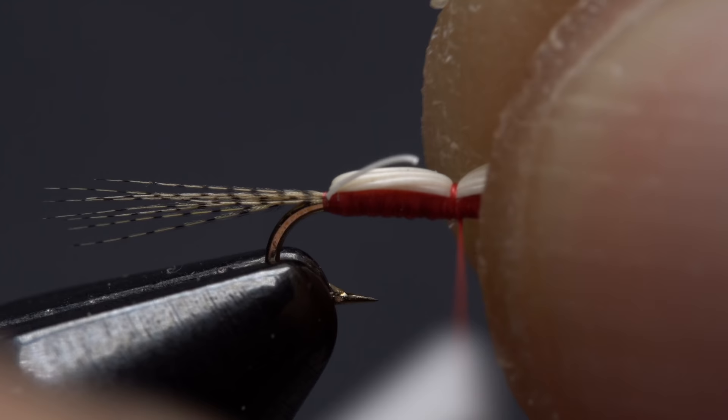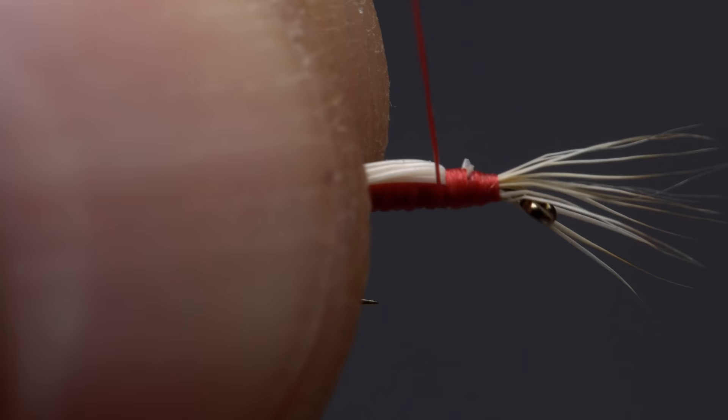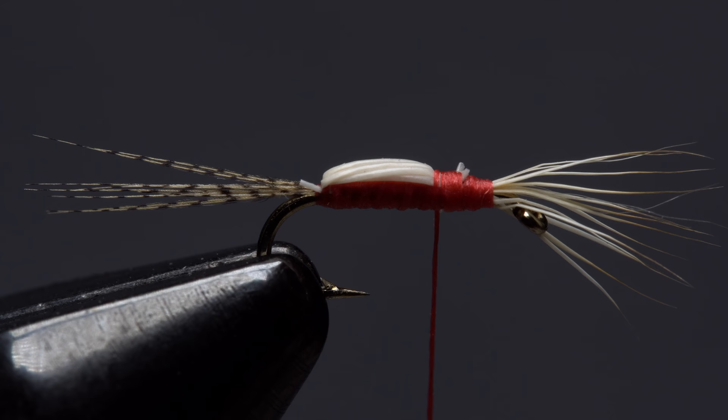Pull the deer hair forward and take a few wraps of tying thread to hold it down. If you break a hair or two here like I did don't worry it can be snipped off later. Lift the butt ends up to vertical and snip them off close. Then cover the ends with wraps of tying thread back to the initial tie-in point. Again snip any broken hairs off if you need to.